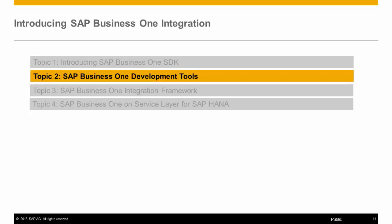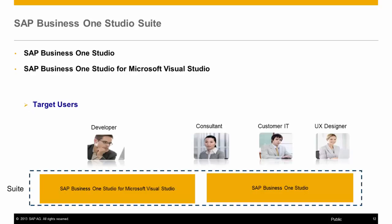Now let's look at the development tools available to help streamline the creation of integrations with SAP Business One and the SAP Business One SDK. SAP Business One Studio Suite is a state-of-the-art development platform for SAP Business One extensions that dramatically improves development efficiency, providing an integrated development environment to develop extensions on top of SAP Business One. Studio Suite consists of two editions: SAP Business One Studio, geared towards technical IT, UI designers, and consultants for easy creation or modification of existing forms; and SAP Business One Studio from Microsoft Visual Studio, geared towards developers and tightly integrated with Visual Studio and .NET, allowing for code generation.